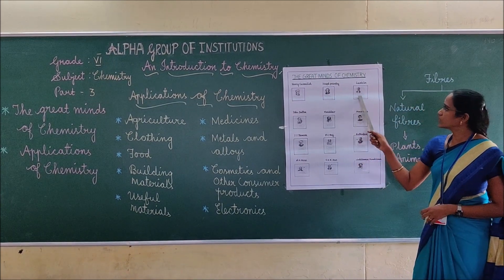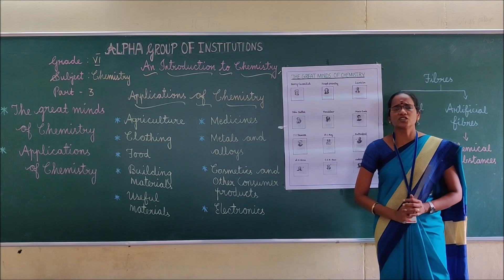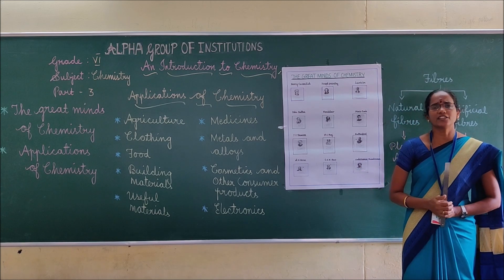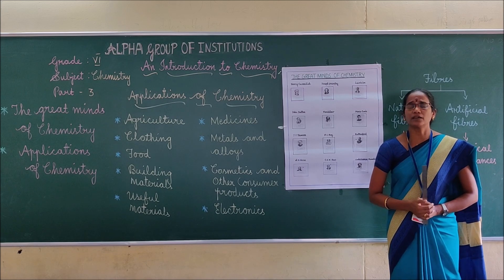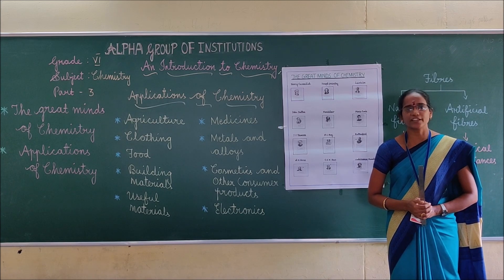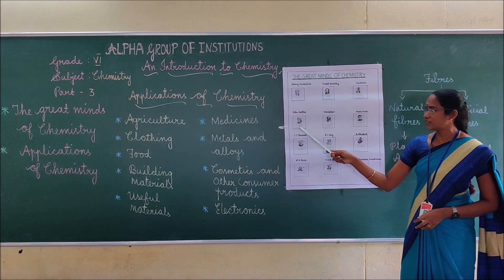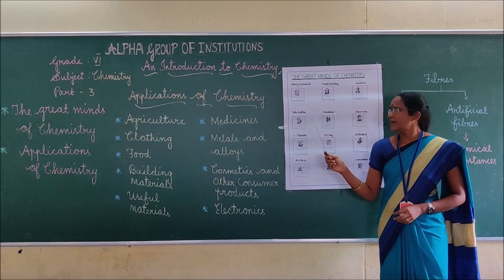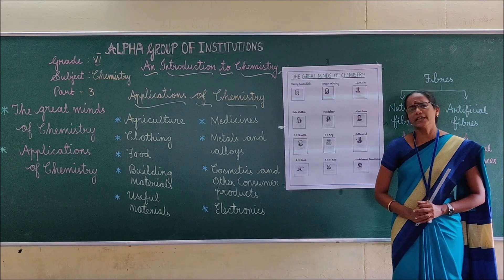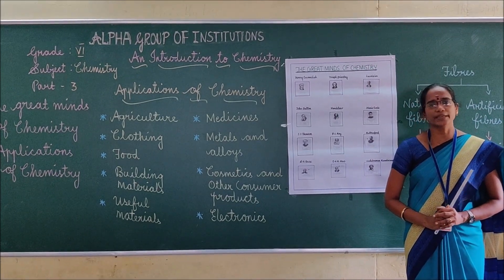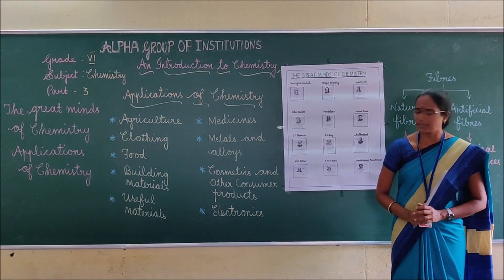Next, the third one: Lavoisier. He recognized and named hydrogen and oxygen. He developed the law of conservation of mass. Next: John Dalton. He was an English chemist and metrologist. He proposed the atomic theory.